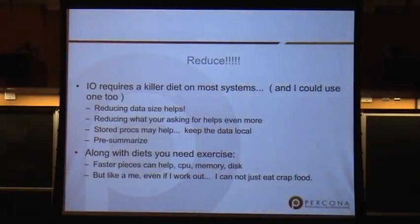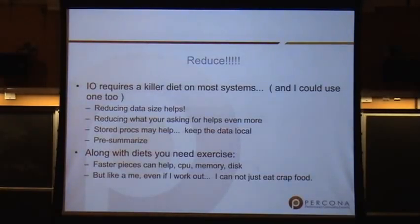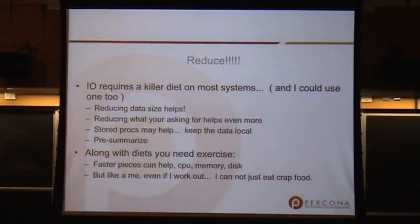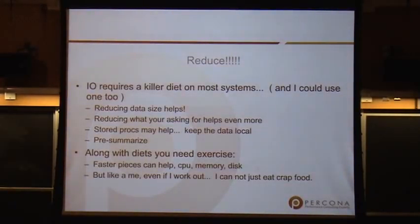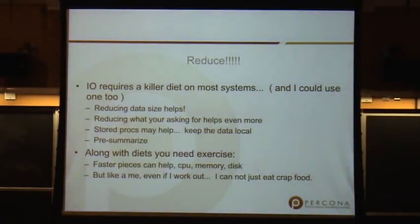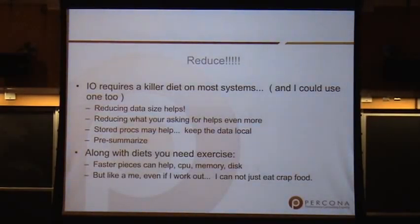One trick to reduce network I/O is to use stored procedures — stored procedures keep the data local. If your application pulls data over, processes it, and throws it back to the database, that's network latency going back and forth. Another big one is pre-summarizing your data. When you go through and build an aggregate — count or sum — you have to retrieve all the data from disk, process it, aggregate it, and then retrieve the one value. But if it's already pre-calculated, you've reduced the number of records needed to satisfy that.